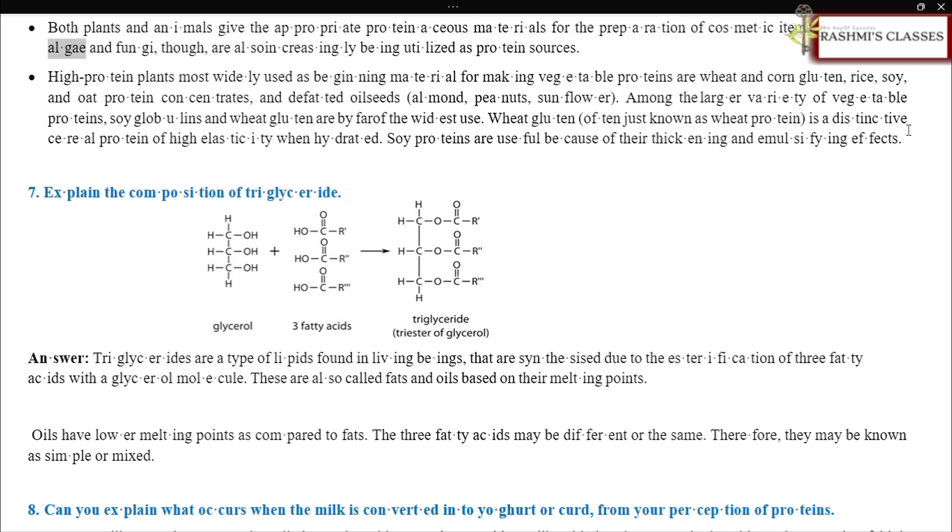Both plants and animals give the appropriate prognitious materials for the preparation of cosmetic items. Proteins from algae and fungi, though, are also increasingly being utilized as protein sources. High protein plants most widely used as beginning material for making vegetable proteins are wheat and corn gluten, rice, soy, and oat protein concentrates, and defatted oilseeds, almond, peanuts, sunflower. Among the larger variety of vegetable proteins, soy globulins and wheat gluten are by far of the widest use. Wheat gluten, often just known as wheat protein, is a distinctive cereal protein of high elasticity when hydrated. Soy proteins are useful because of their thickening and emulsifying effects.